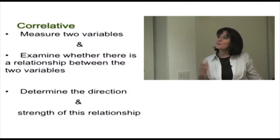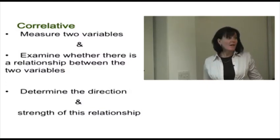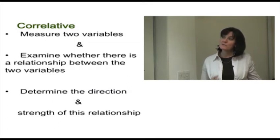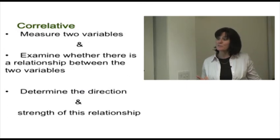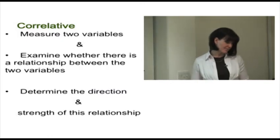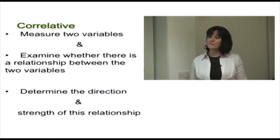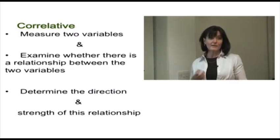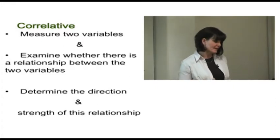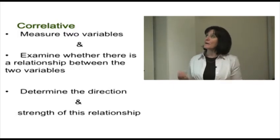We can use different scientific strategies. If we use a correlative approach, we can examine relationships — that's contrasted with a causal approach. In a correlative approach, we measure two variables and examine whether there's a relationship between them. We also try to determine the direction and the strength of this relationship. The direction could be positive or negative and the strength could be weak or strong. We need to be able to say whether this relationship is significant — is it stronger than we would expect by chance?